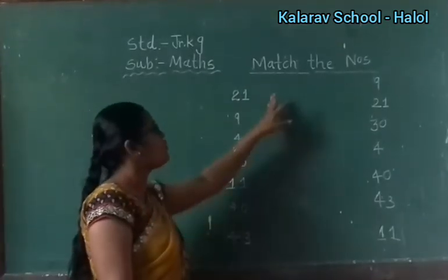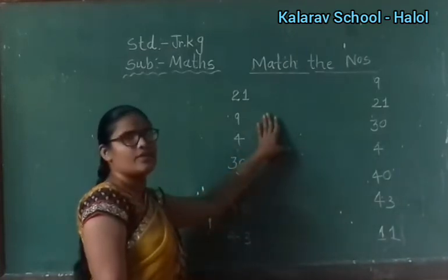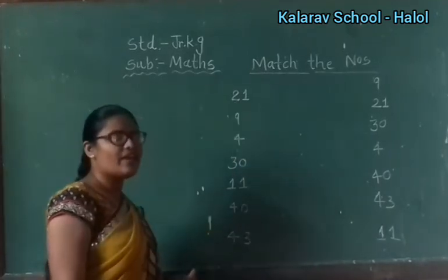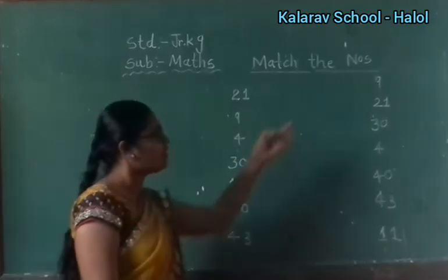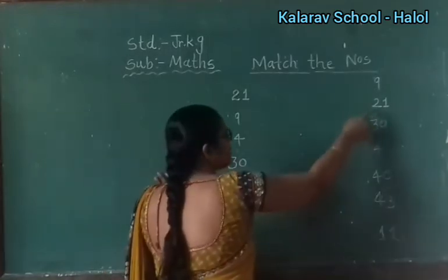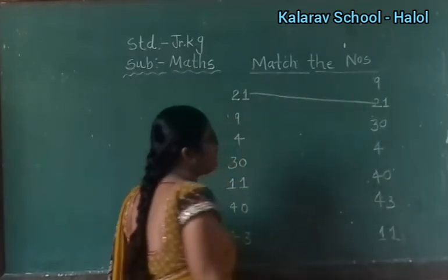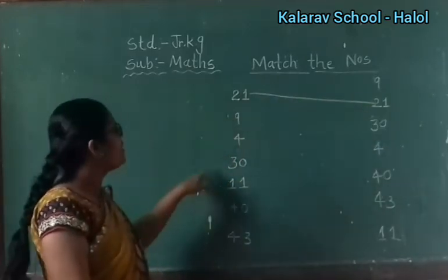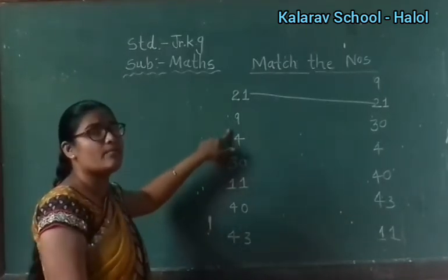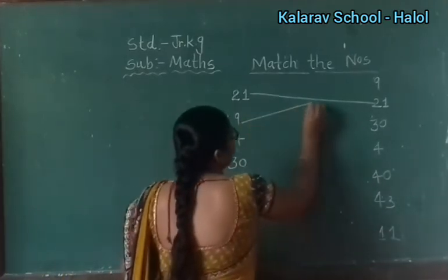Now I will teach you: match the number. Match each other. Look here — which number is this? 21. So find out where is the number 31, children. Yes, here. So match, match each other. Now find out the number 9. So find out where is the number 9. Yes, here. So match it.